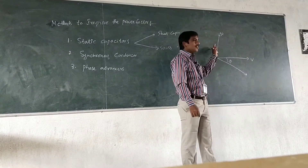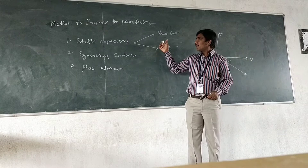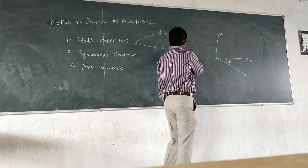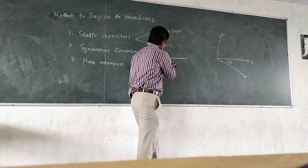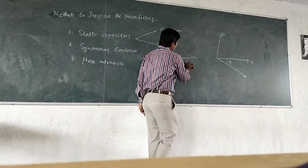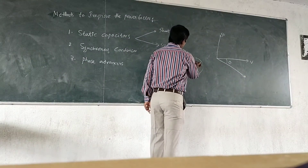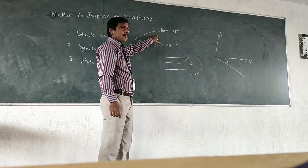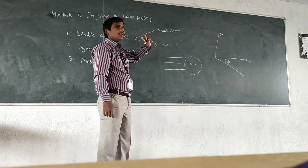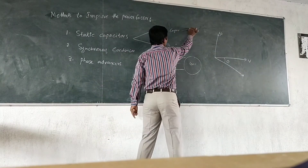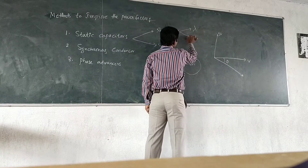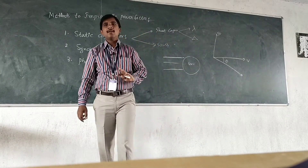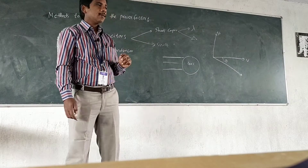Due to the introduction of shunt capacitors or series capacitors — shunt capacitors connect to the load — we can connect shunt and series capacitors. The shunt and series capacitors can be connected in two ways: one is star and the other is delta. Delta-connected capacitors and star-connected capacitors.